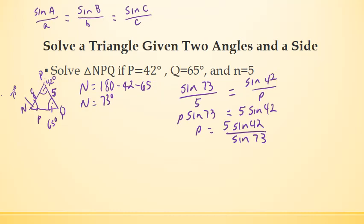And then to solve for P, I've got 5 times the sine of 42 divided by the sine of 73. And if I round that to the nearest tenth, then side length P is going to equal 3.5. We'll probably jump over to the calculator and punch that in just to give us a little practice on that.